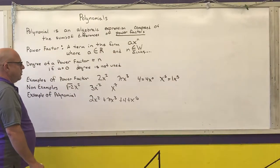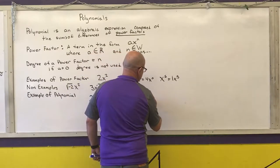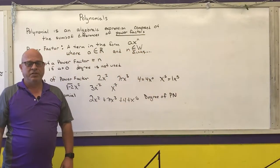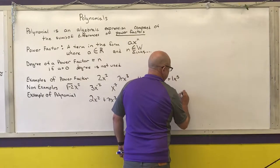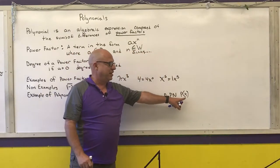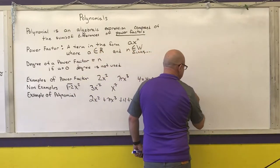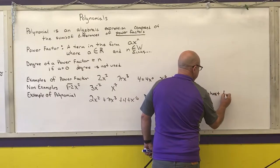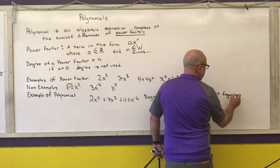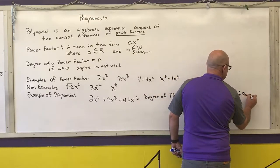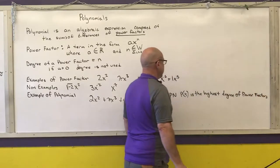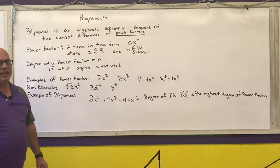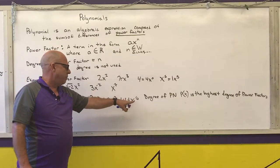The degree of a polynomial — I'll use P as an abbreviation, or P(X) meaning a polynomial in X — is the highest degree of the power factors. So this polynomial would have a degree of 5, because that is the highest degree power factor in it.